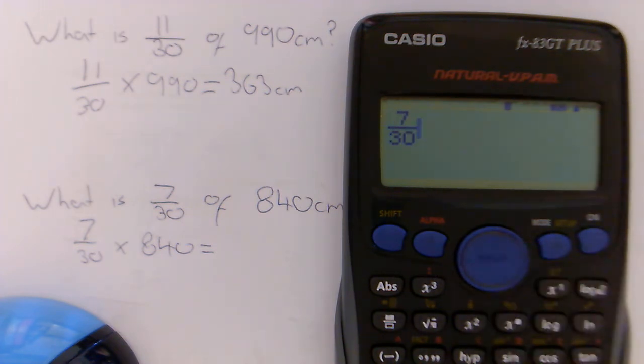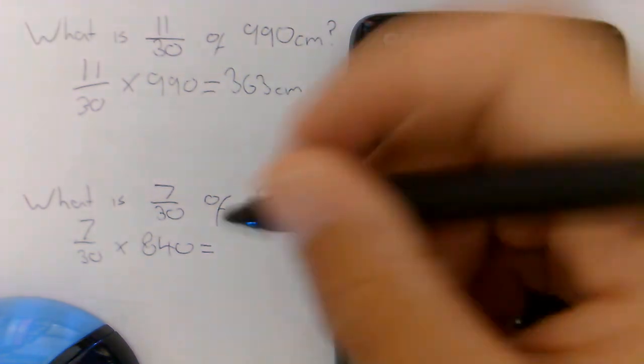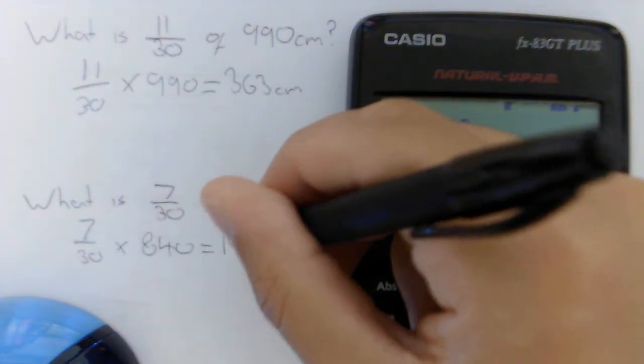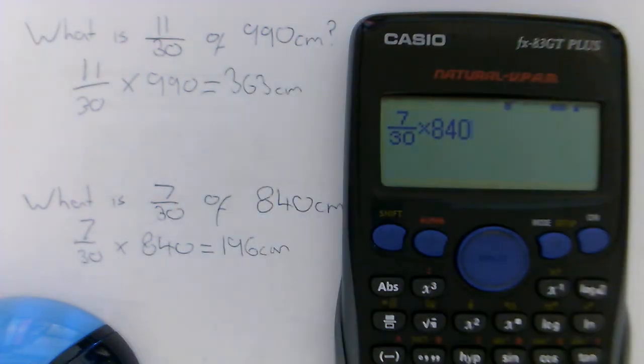Press the right key to take us out of the fraction. Now we type in times 840 and press equals and we get an answer of 196 centimetres. And that's how we find our answers.